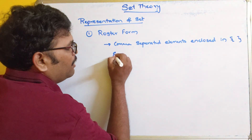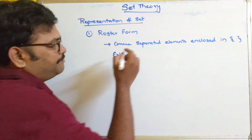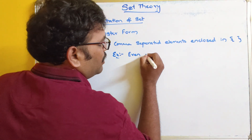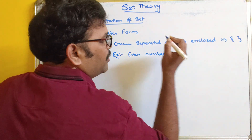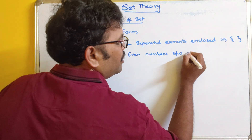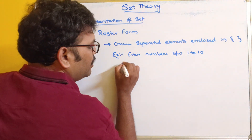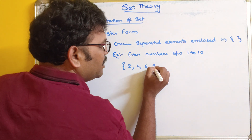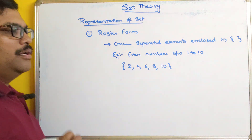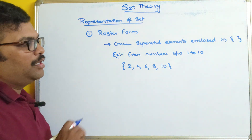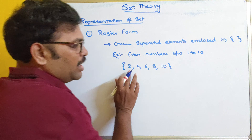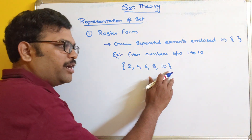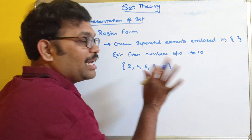For example, even numbers between 1 to 10 in roster form can be represented as {2, 4, 6, 8}. These comma-separated elements or objects enclosed in curly braces form an example of roster form.